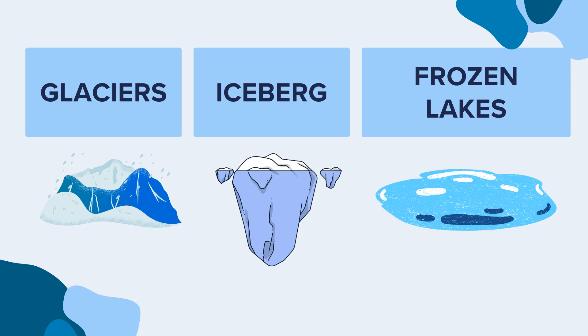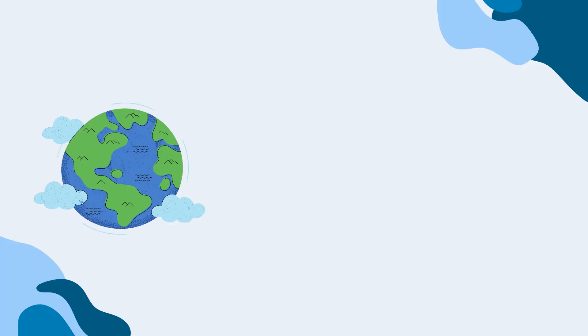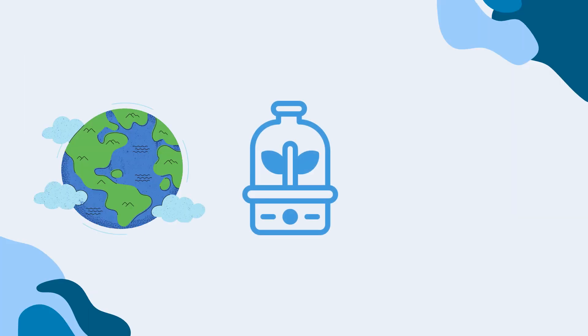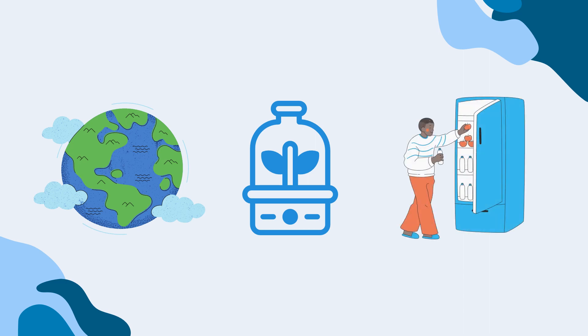Ice forms due to natural causes. However, ice can be formed under an artificial environment too. For instance, ice can be formed artificially in the refrigerator in our homes.